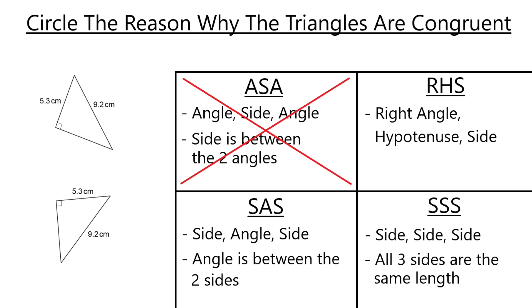Next, we have RHS, which means right angle, hypotenuse, and side. So basically, both have a right angle, both the triangles, both the hypotenuse are the same length, which we can see here because it's the side opposite the right angle. And they also have a side which is the same length. So we know this is going to be the correct answer. So it's because of RHS, but let's go through the other two.